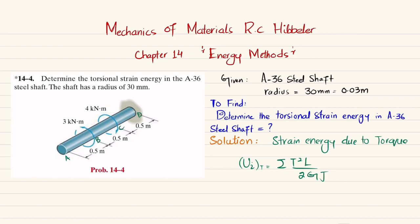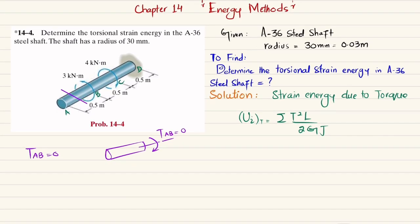We will name the points: this is point A, this is point B, this is point C, and this is point D. When we section it between length AB and draw the free body diagram, there is no torque along the length of shaft AB, so T_AB = 0.